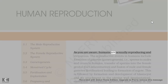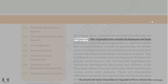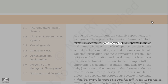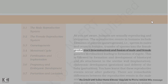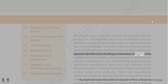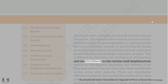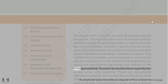As you are aware, humans are sexually reproducing and viviparous. The reproductive events in humans include formation of gametes (gametogenesis), i.e., sperms in males and ovum in females, transfer of sperms into the female genital tract (insemination), and fusion of male and female gametes (fertilization), leading to formation of zygote. This is followed by formation and development of blastocyst and its attachment to the uterine wall (implantation), embryonic development (gestation), and delivery of the baby (parturition).